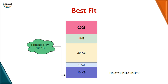In best fit, you search all available free blocks and choose the smallest block that can accommodate the process. For example, if you have 20 KB and 10 KB free blocks and need to store a 10 KB process, best fit selects the 10 KB block — avoiding internal waste. Allocating to the 20 KB block would leave 10 KB wasted internally.